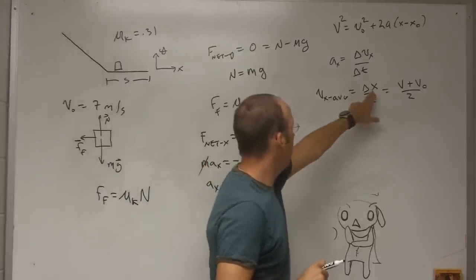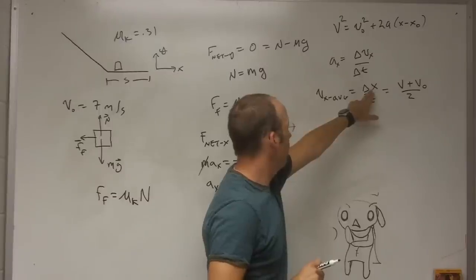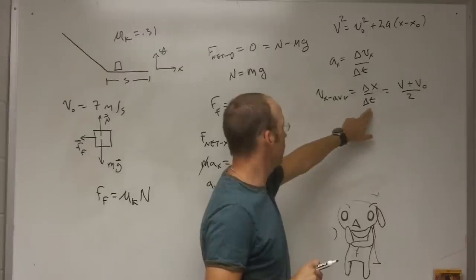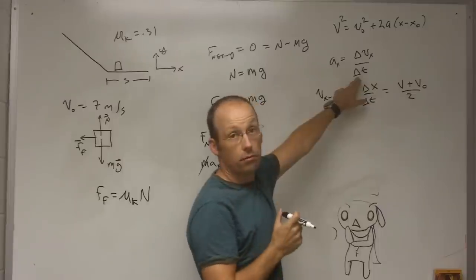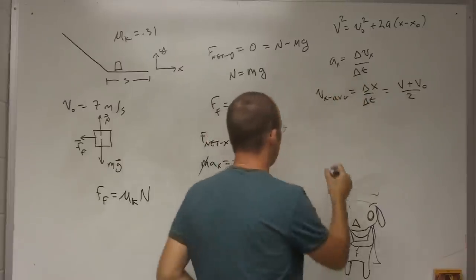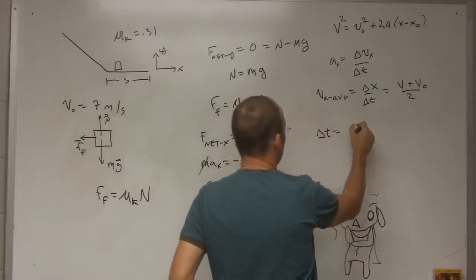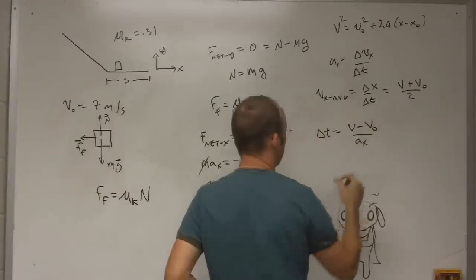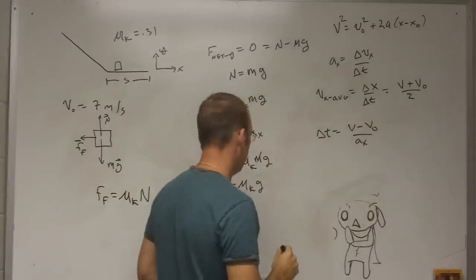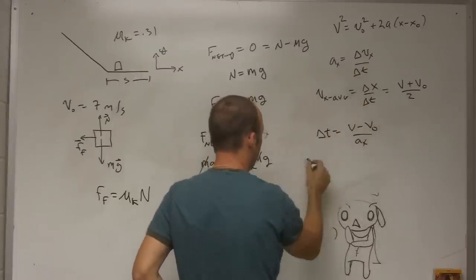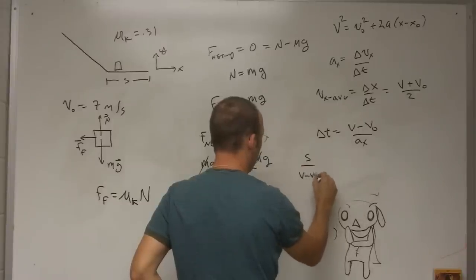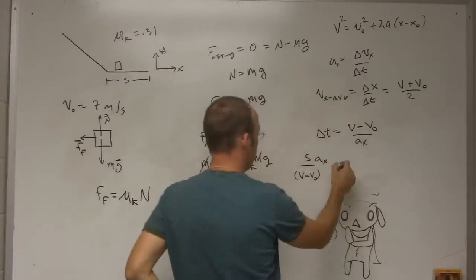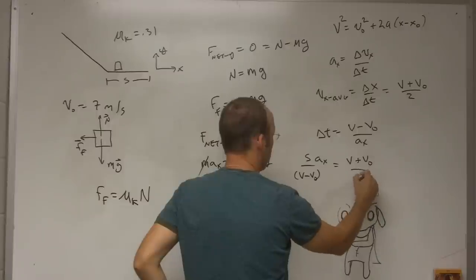So right here, I want to find x, delta x, which in this case is just s. But I don't know delta t. But I do know delta t from up here. So I can say delta t equals, I'll just write this as v minus v naught over ax. And so putting that together with this, I'll say s over v minus v naught ax, right, because I divide by that, equals v plus v naught over 2.